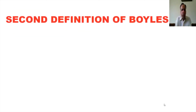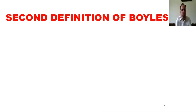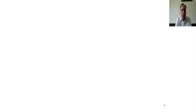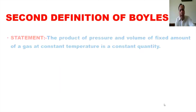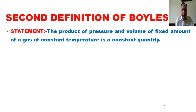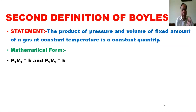Now, what is the second definition of Boyle's Law? PV is equal to K — the product of pressure and volume of a fixed amount of a gas at constant temperature is a constant quantity. This is the second definition of Boyle's Law.